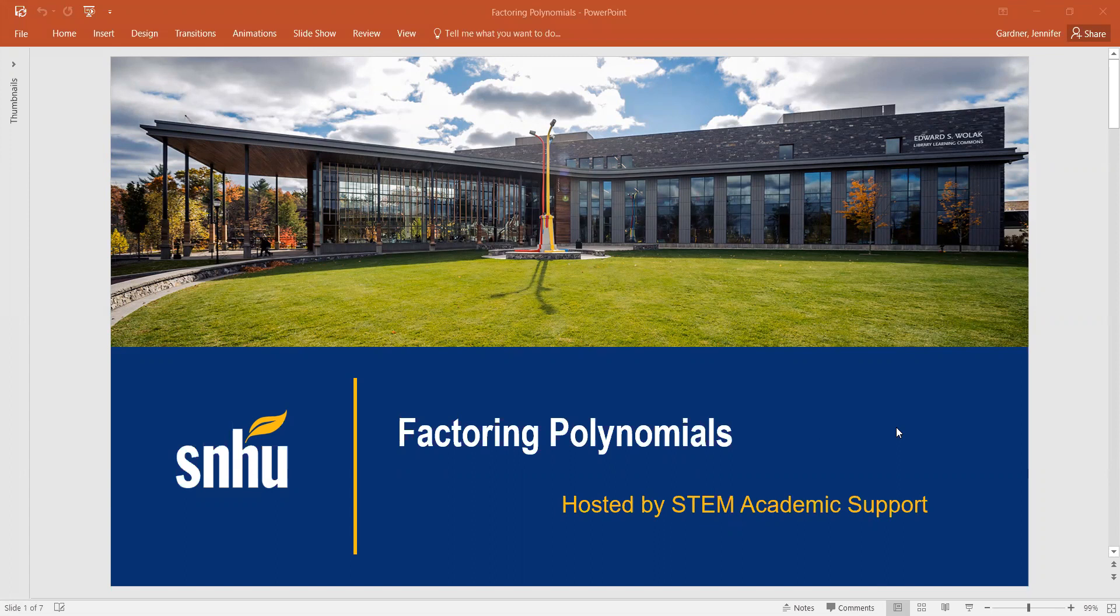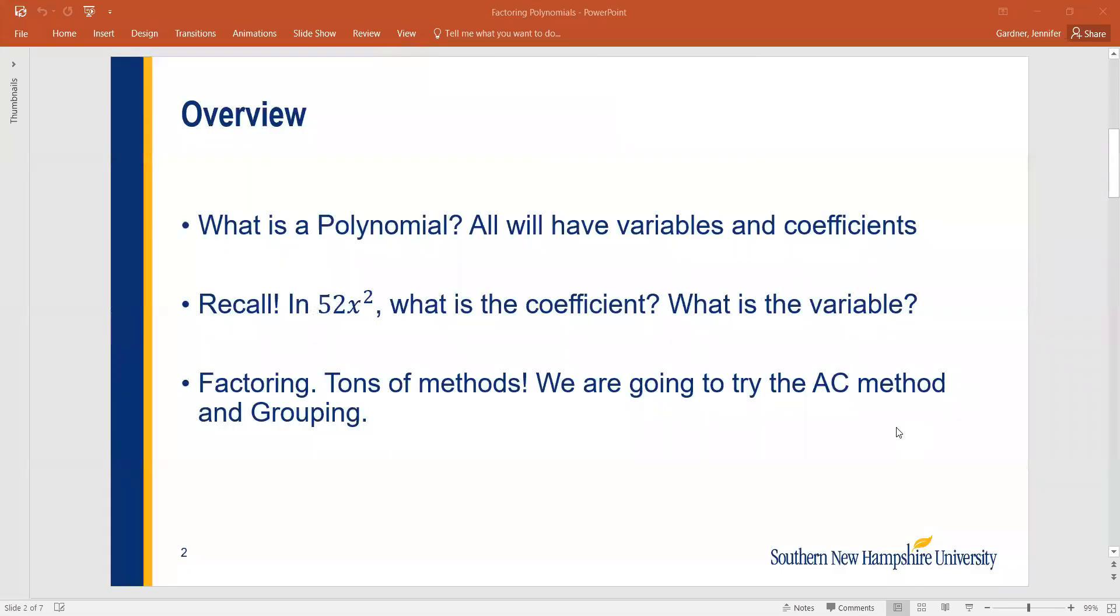Factoring polynomials. First we're going to talk about a polynomial and what it is. All polynomials are going to have variables and coefficients. Coefficients are the numbers that are being multiplied to the variables, and the variables themselves are letters that represent some sort of value.